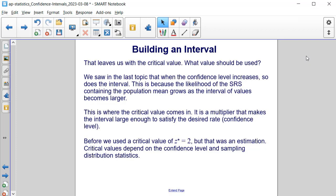And that leaves us with the critical value. But what value should be used? Well, we saw in the last topic that when the confidence level increases, so does the interval. This is because the likelihood of the simple random sample containing the population mean grows as the interval of values becomes larger. This is where the critical value comes in. It is a multiplier that makes the interval large enough to satisfy the desired rate or confidence level. Before, we used a critical value of z* equal to 2, but that was an estimation. Critical values depend on the confidence level and sampling distribution statistics.